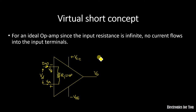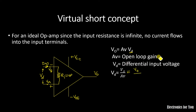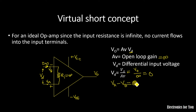As the current is 0, we use the formula: output voltage Vo is equal to Av times Vd, where Av is the open-loop gain and Vd is the differential input voltage. Therefore, Vd equals Vo divided by Av. Since Av is infinite for an ideal op-amp, Vd equals 0. Now Vd is our differential voltage equal to Va minus Vb, and it equals 0.